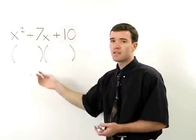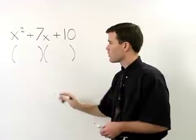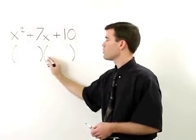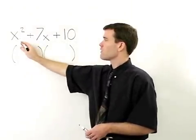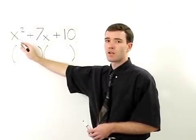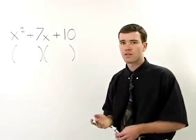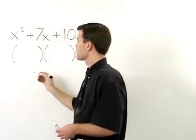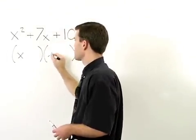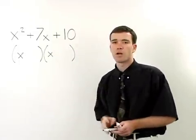So what goes inside these parentheses? The first term in each binomial will be a factor of x squared. Since x squared factors as x times x, we use x as the first term in each binomial.